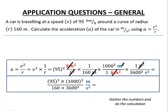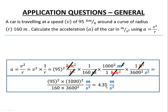Gathering the numbers: 95 squared times 1000 squared in the numerator, divided by 160 times 3600 squared in the denominator. Our final acceleration to two decimal places is 4.35 meters per second squared.